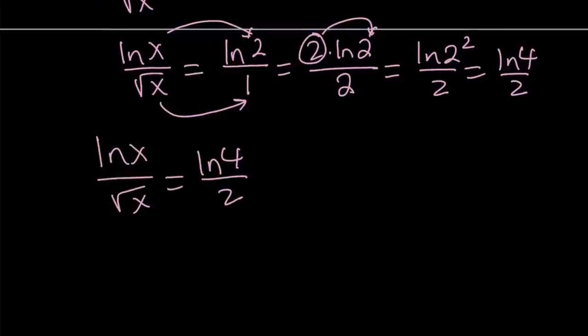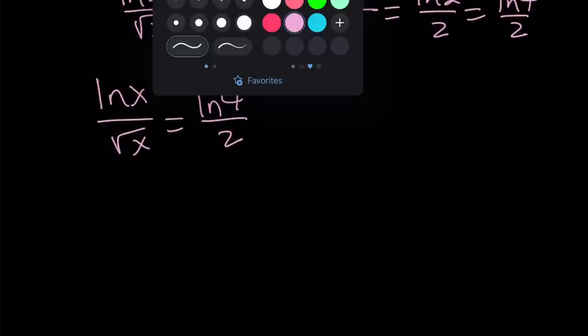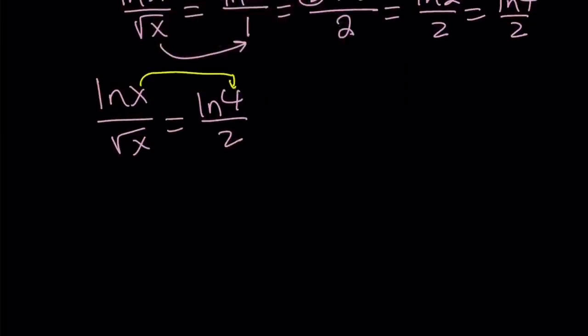Now, let me rewrite it for you. LN x over square root of x equals LN 4 over 2. Why is it awesome? Because it works. Look at this. If x is 4, square root of x is 2. And yay, we got a solution. I'm not saying these are all the solutions, but at least we got one solution. So x equals 4 works.